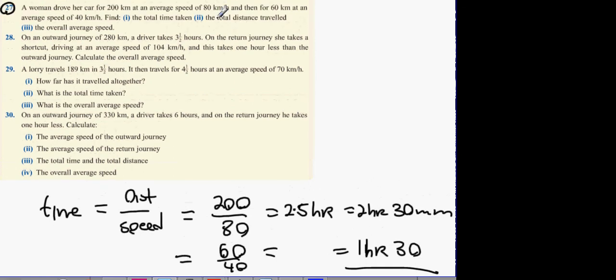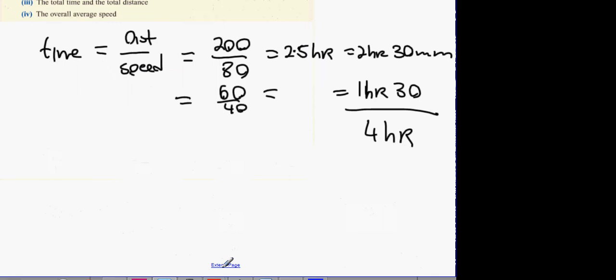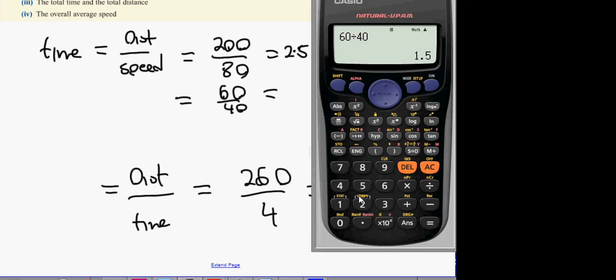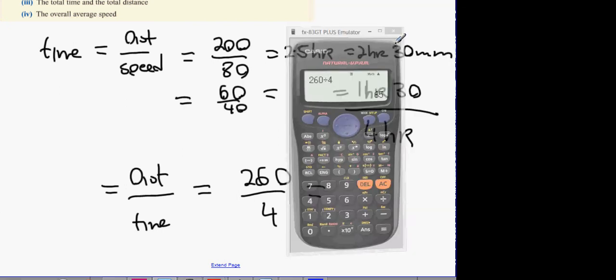Now what's going to ask next is find the total distance traveled—that is 200 plus 60 equals 260—and the overall average speed. The overall average speed is distance over time, so what we get here is 260 divided by 4, and what we get there is 65 kilometers an hour.